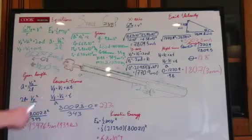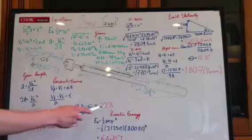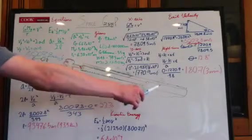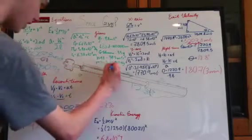So we'll set that at zero over our acceleration, which is once again going to be the human G-tolerance. This is going to give us 23.3 seconds of time in the gun. Let's write these down again.